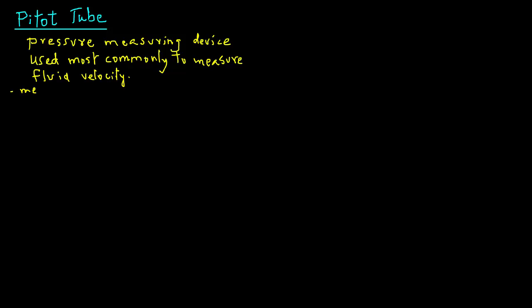Pitot tube is also very useful in measuring the velocity at any point in the fluid stream. It's not giving us the average value, but it is giving us the point velocity, in other words, velocity at a certain point in the fluid domain.